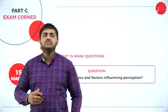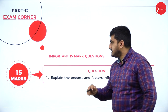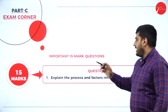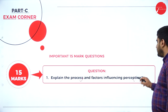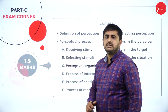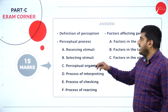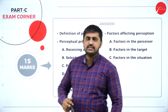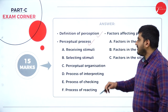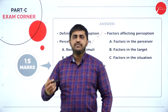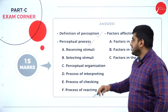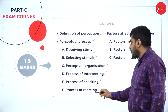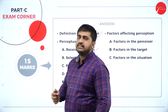First we will discuss the important questions in Part C one by one. The main important question you can expect is: explain the process and factors influencing perception — this is from the first chapter. How do you write this? First give one definition of perception, then give an introduction to the perceptual process. There are 6 steps: receiving stimuli, selecting stimuli, perceptual organization, process of interpreting, process of checking, and process of reacting. You explain each as given in the notes.